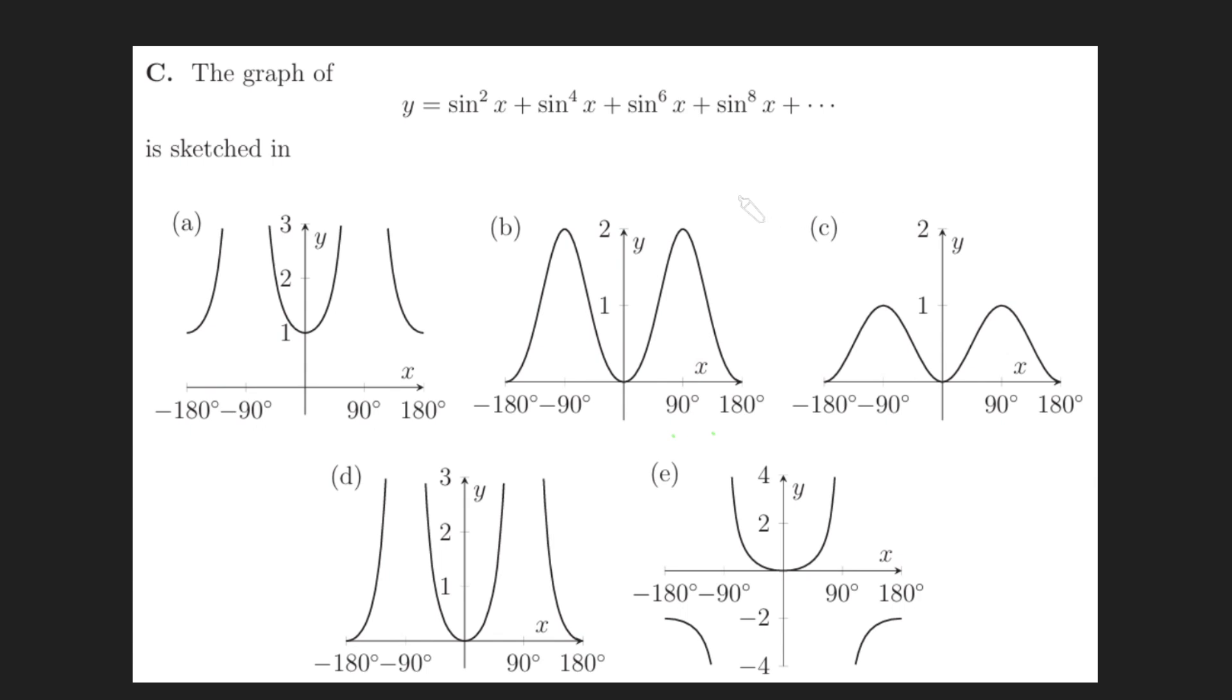If you've seen me do these sorts of problems before, you'll know that I like to do this via elimination. First things first, let's sub in x is 0. When x is 0, well, sin x is 0. So that means that all of these terms here will be 0, and so y will be 0. So that eliminates this guy because the y intercept is 1, and that's the only one it really eliminates.